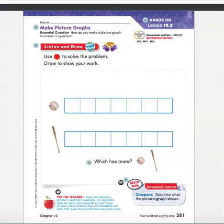Hi everyone! Today we are going to learn how to make picture graphs. You're going to need a few things: your Go Math book chapter 10, a pencil, and a few counters. You might not have counters at home, which is okay — you just need little items to help you count. You can ask your guardian for beans, Cheerios, or little erasers if you have them around.